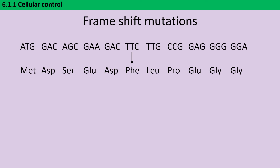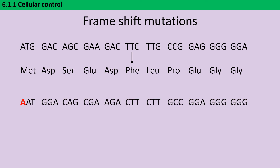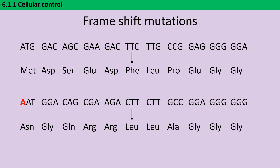Insertions and deletions are particularly tricky because they may lead to what we call a frameshift mutation. When you have a substitution mutation, one base is changed and therefore one amino acid changes. However, if we insert an additional base, this affects all of the amino acids that come after it — every codon has shifted along by one. It isn't always the case that an insertion or deletion will cause a frameshift, because if we insert or delete a number of bases divisible by three, there is no frameshift, and this would have a far smaller impact than inserting one or two bases.